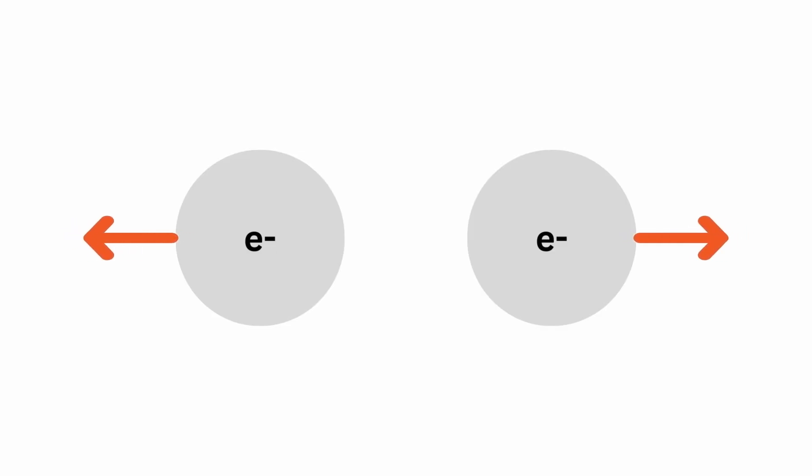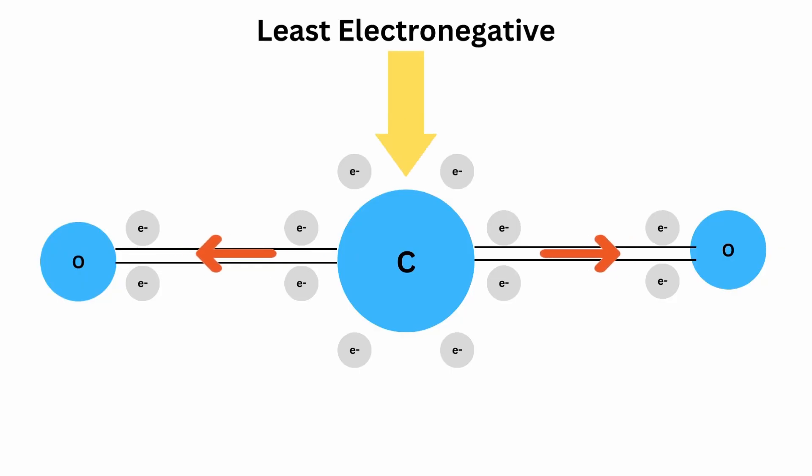Bond pairs are the electron pairs that form the covalent bond, while lone pairs are the electron pairs on the central atom not used for bonding. For simplicity, we'll focus on compounds with only bond pairs. When lone pairs are present, they tend to increase electron repulsion, so bond angles typically decrease — but that would over-complicate our focus. Each bond and lone pair is called an electron domain, and we'll focus on up to six electron domains.